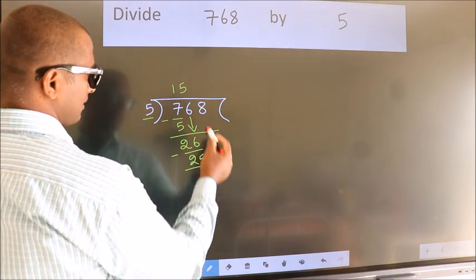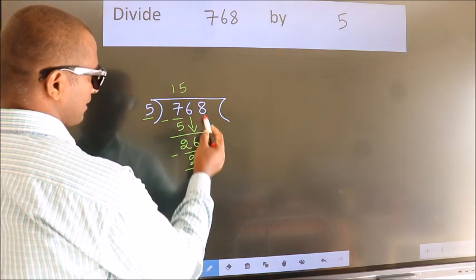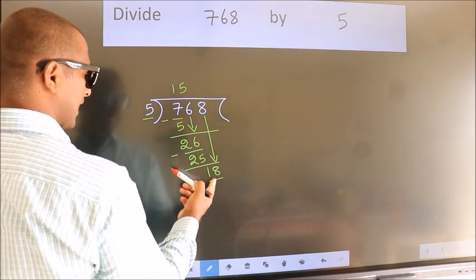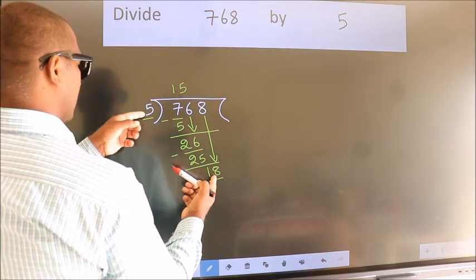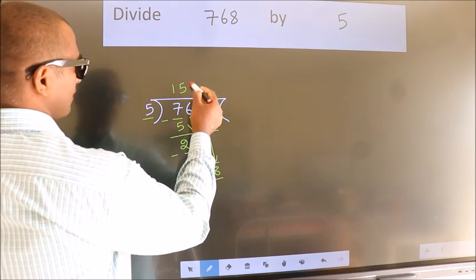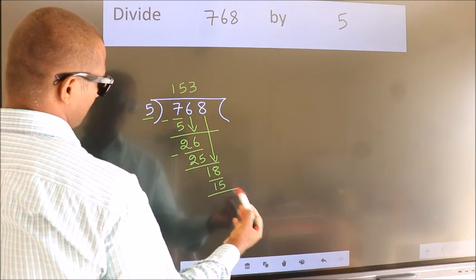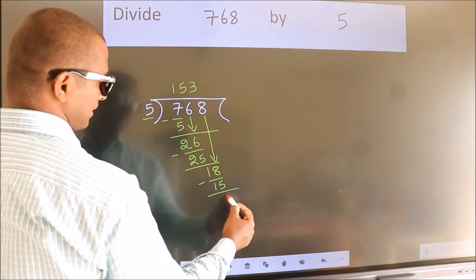After this, bring down the beside number. So, 8 down, making 18. A number close to 18 in the 5 table is 5 threes, 15. Now we subtract. We get 3.